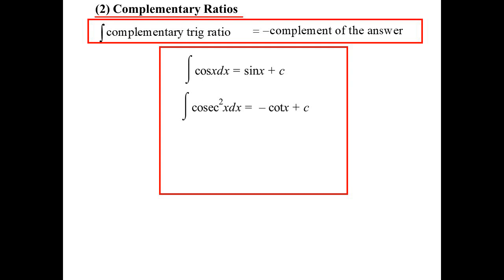So cosec squared, well we know that when we integrate sec squared, we get tan, so therefore we integrate cosec squared, we should get negative cot.